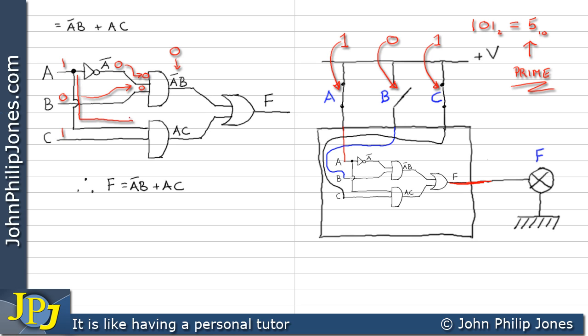Now if we follow the one down from the A to the input of this AND gate and the C. We can see we have two ones which gives us a one here. Consequently into this OR gate we get a zero and a one. And that's sufficient to give us a one at F. Consequently the lamp is switched on.